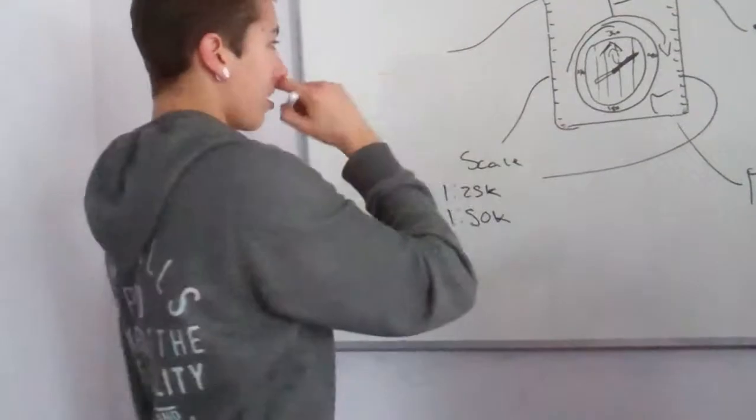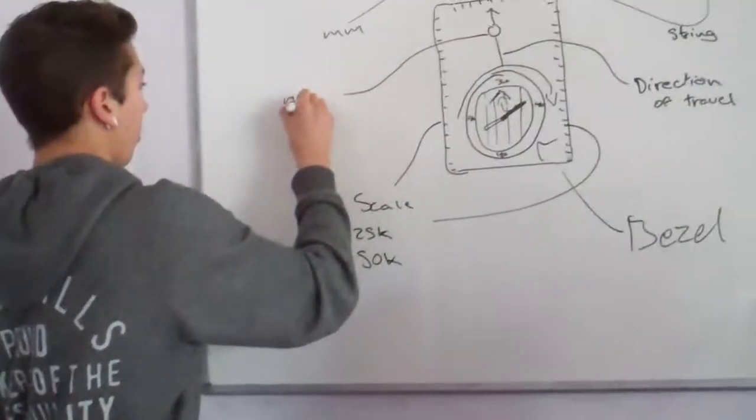There's a magnifying glass here. This is used for looking at small details on the map.